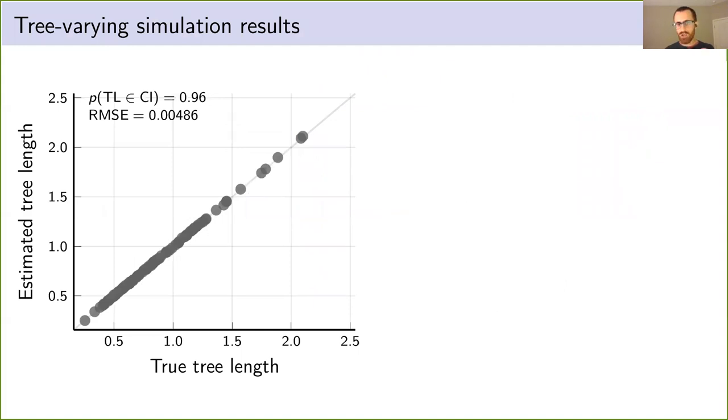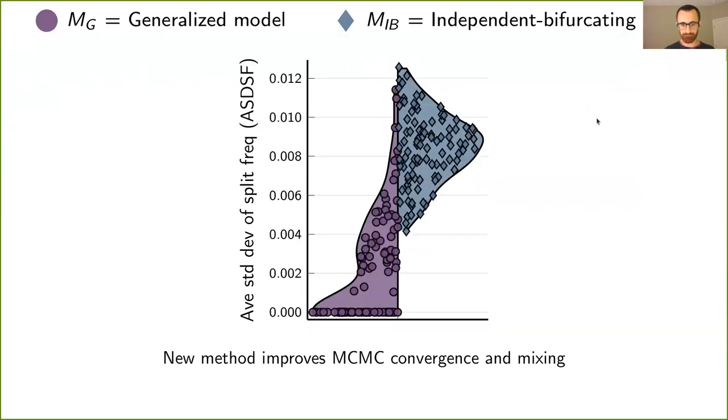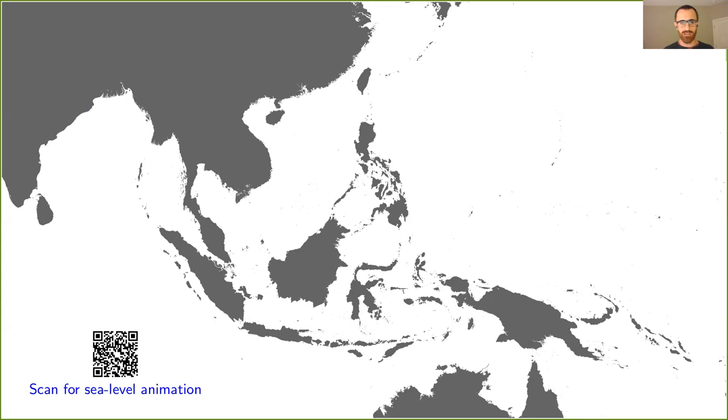Okay. So what if we draw the tree and the divergence times randomly from the generalized tree distribution? Well, we estimate tree length very well, and we get the expected coverage of our 95% confidence interval. And when there are shared divergences, we generally infer them correctly and with high posterior probability. So that looks good. One surprising result is that we actually got better MCMC convergence and mixing with the new generalized tree model. I was sort of really scared that we would get the opposite, but it was a pleasant surprise that we were actually getting better convergence and mixing.